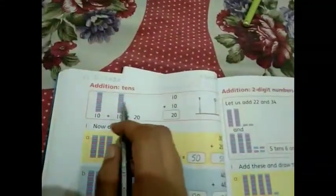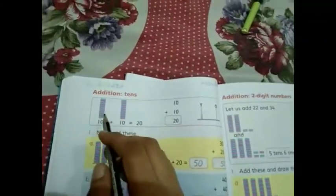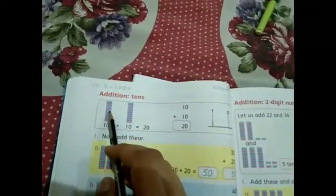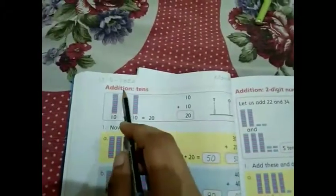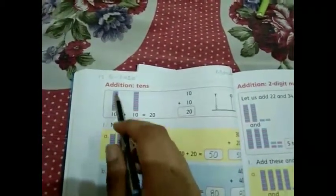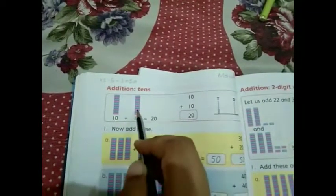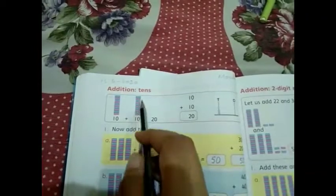Addition of tens - how to add values which are in tens. Here is an example for us. There are 10 tiles. This makes a bar. It means it is equal to 10. This is also the same, so it is also equal to 10.